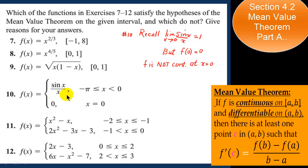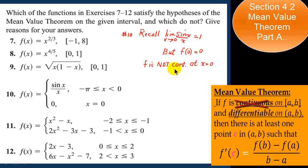For number 10, we have a piecewise function. The limit of sine of x over x as x approaches 0 is 1. However, f of 0 as defined is equal to 0. Since the limit as x approaches 0 does not equal f of 0, f is not continuous at x equal to 0. Therefore, it already fails the first condition of the mean value theorem, and we cannot use the mean value theorem for the function in number 10.